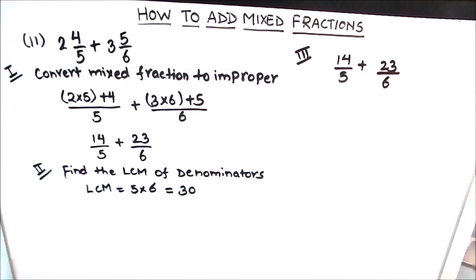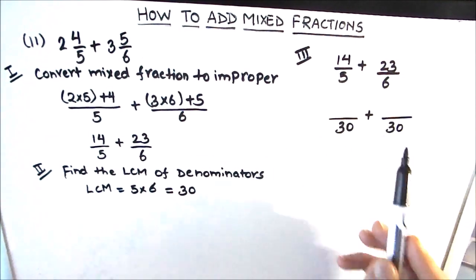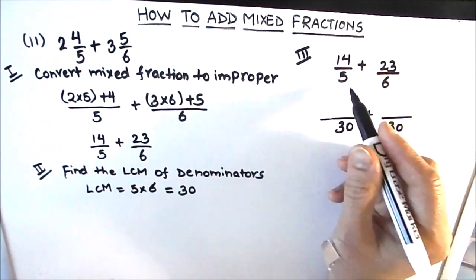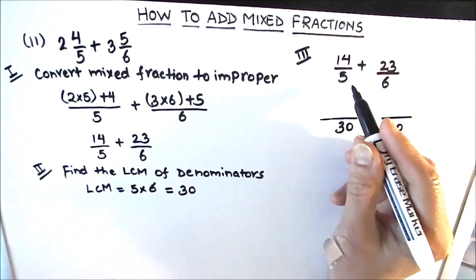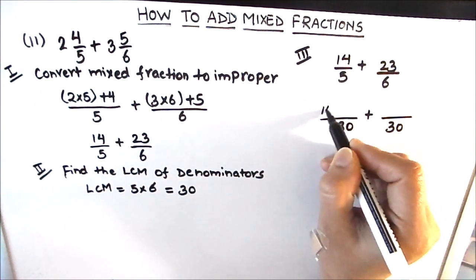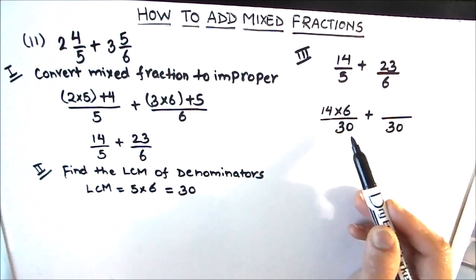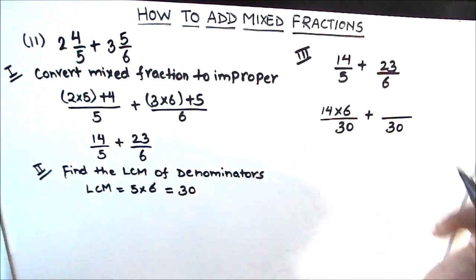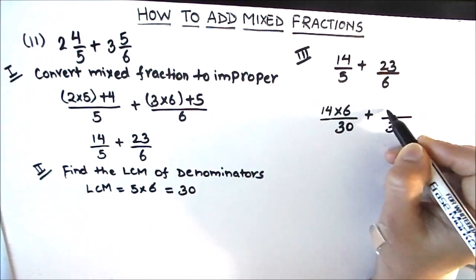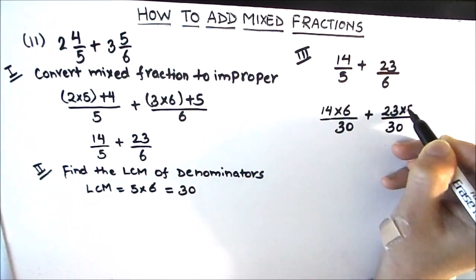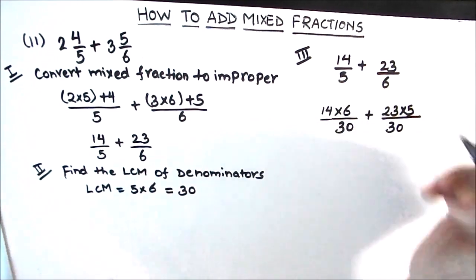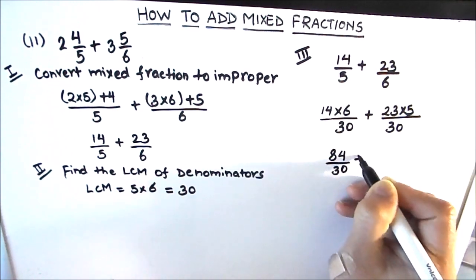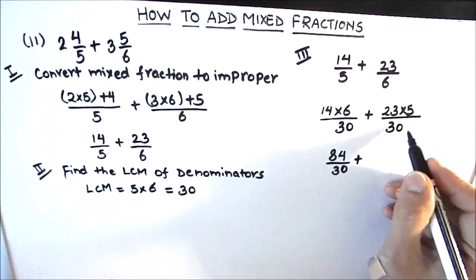Now we'll add the two numbers. The third step is to make the denominators of the two fractions equal to 30, the LCM. So both denominators are now 30. For the first fraction, 5 × 6 = 30, so we multiply 14 by 6. Whatever we do to the denominator, we must do to the numerator to keep the fraction's value unchanged. Similarly, 6 × 5 = 30, so we multiply 23 by 5.